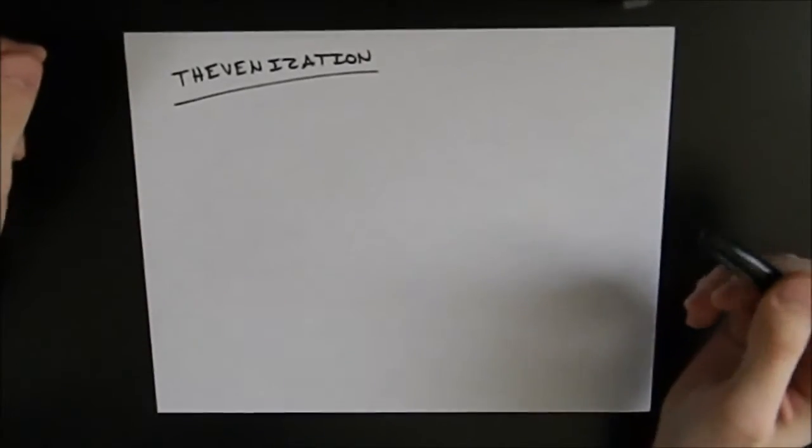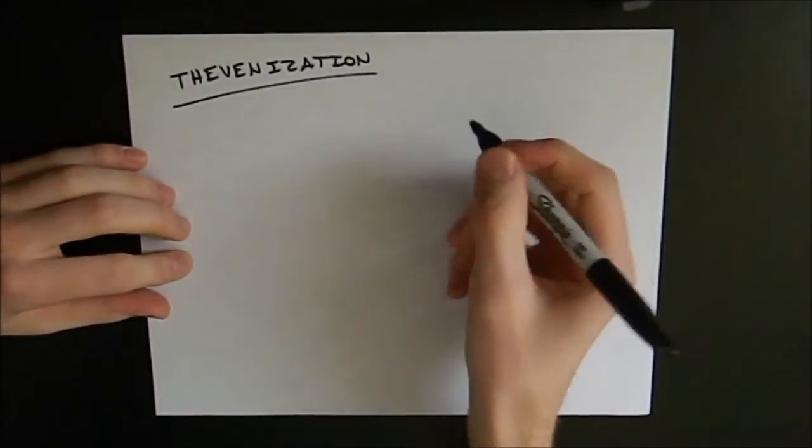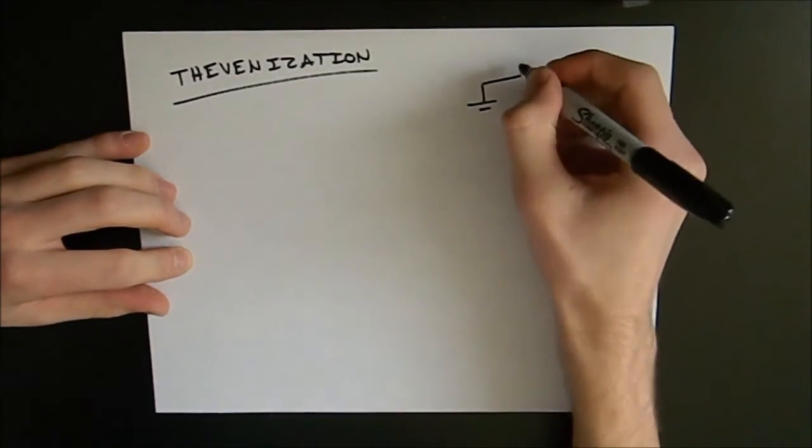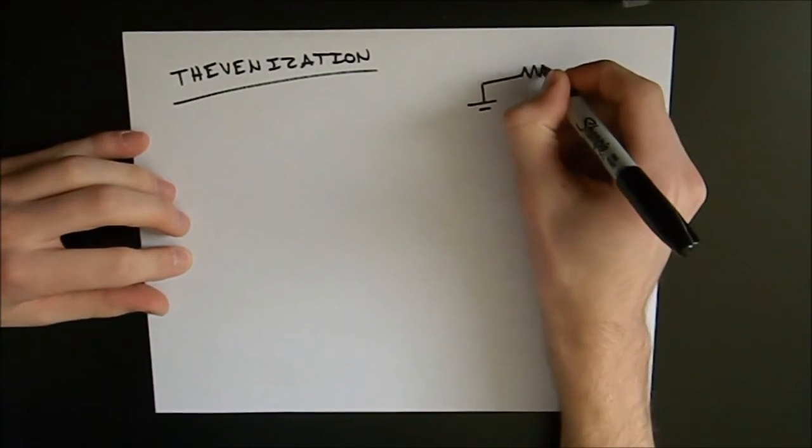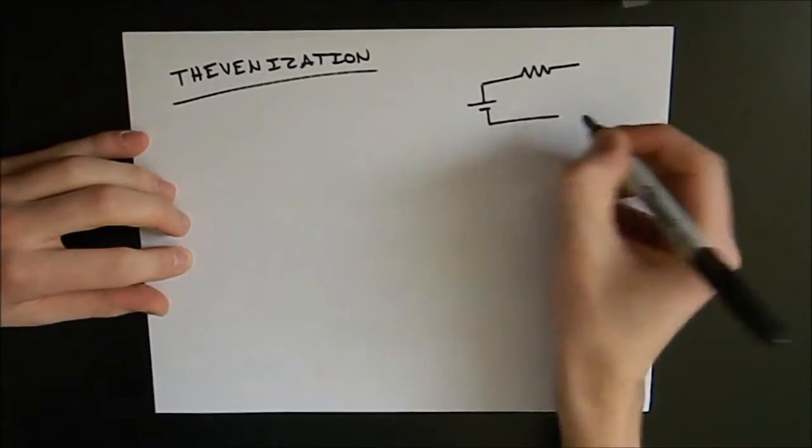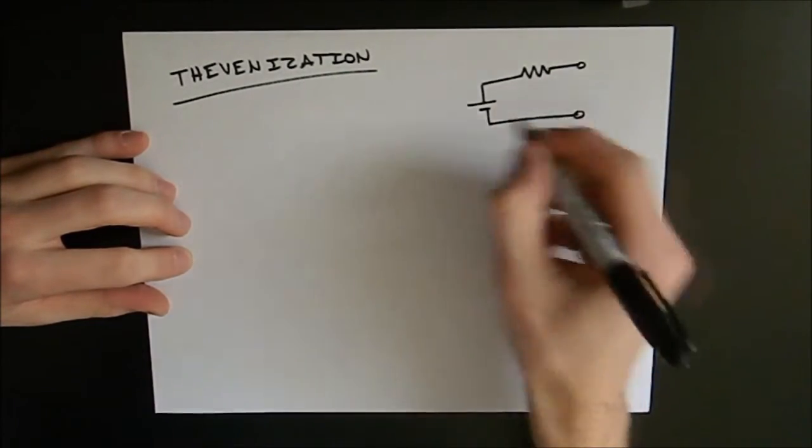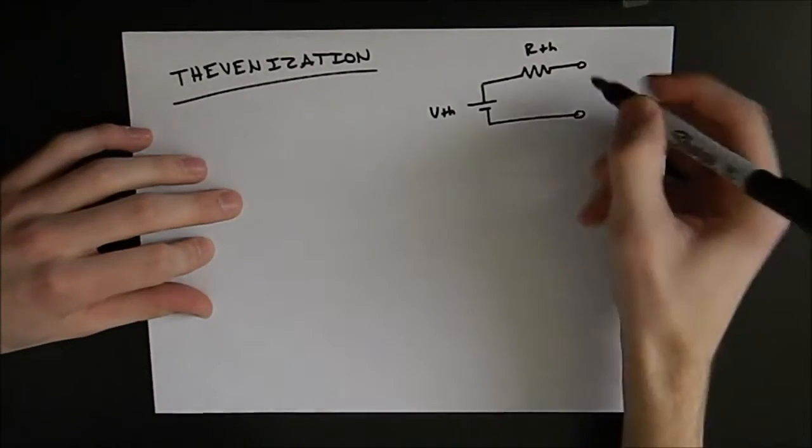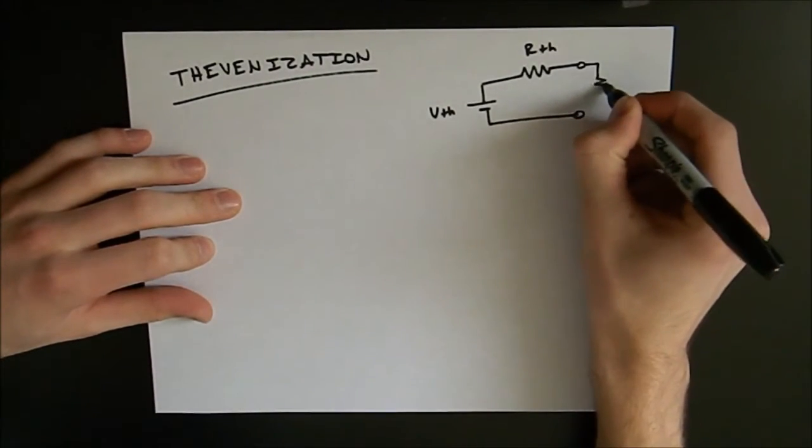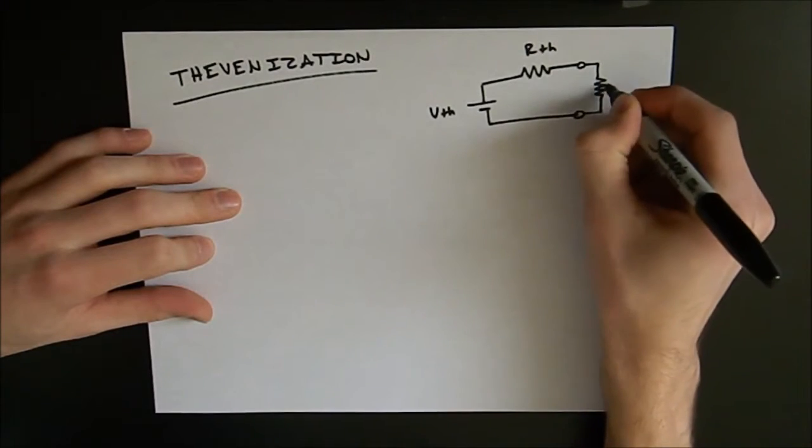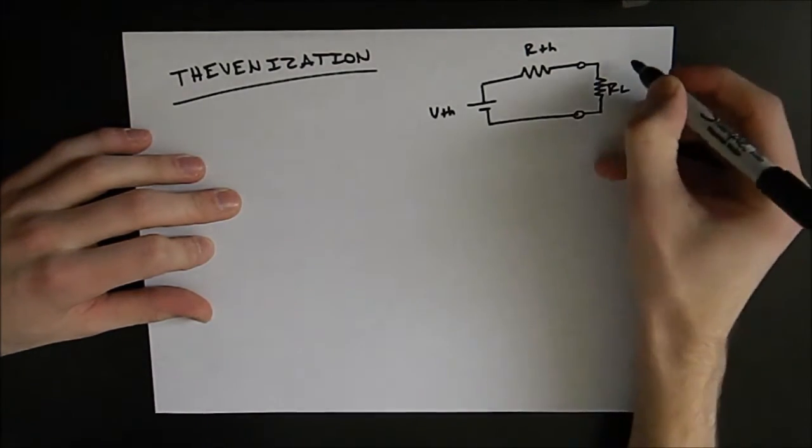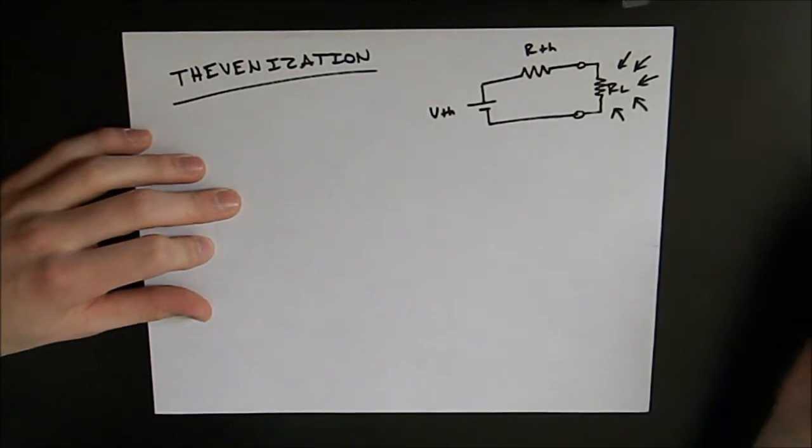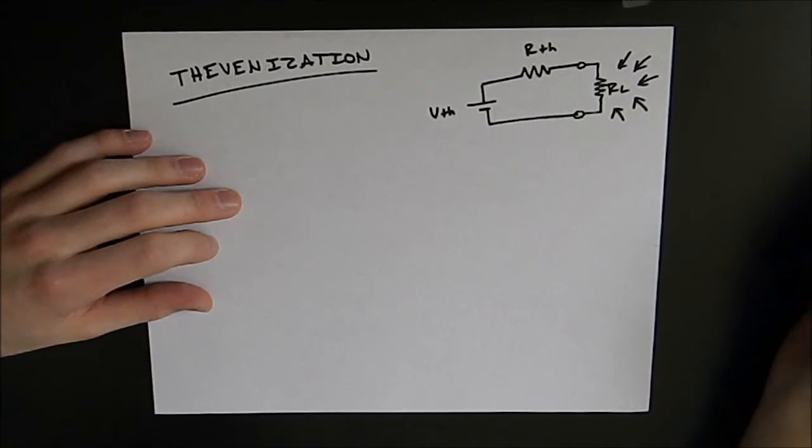Now if you're not sure what the purpose of thevenization is, it allows us to take a circuit of any kind that uses passive components and condense it down into a circuit with a voltage source and a resistor. What that allows us to do is test several different loads without having to reanalyze the circuit each time we want to test a load of a different value.